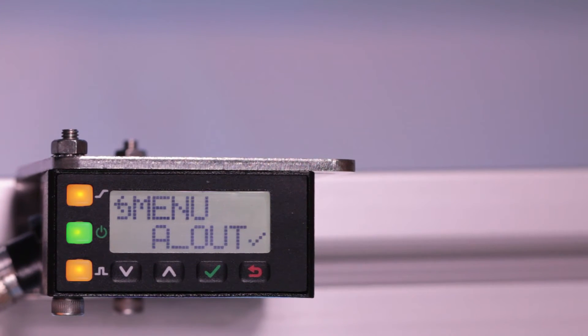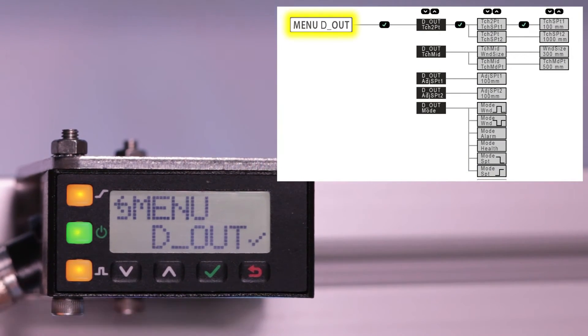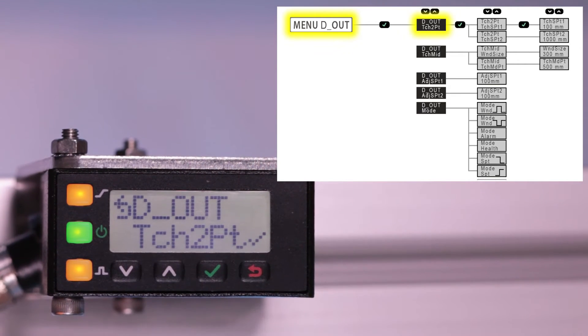The first option within the sensor menu is the analog output submenu. Click down to the discrete output option and click enter to view the discrete output submenu.